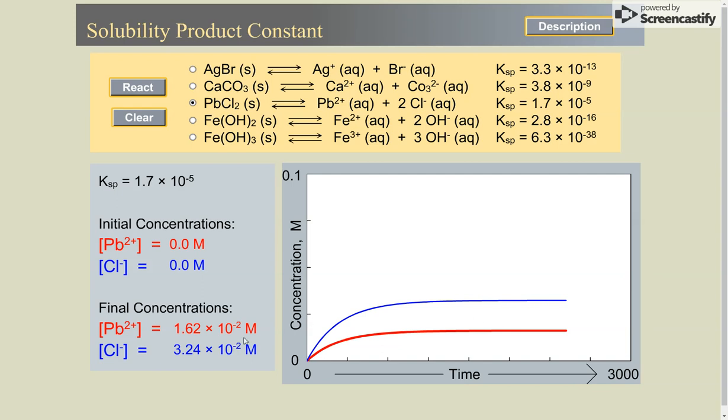So we have twice the amount of chloride ions in solution when we try and dissolve lead chloride in water. Again, it doesn't look as though much has dissolved, but the y-axis is 0.1. So this is quite soluble, 0.0162 moles per litre.